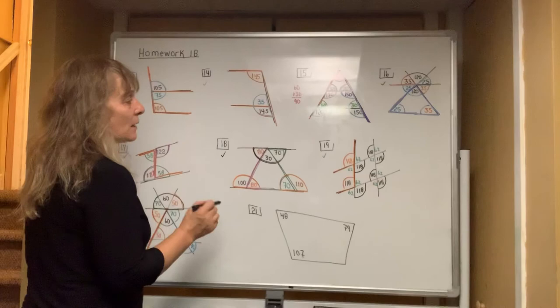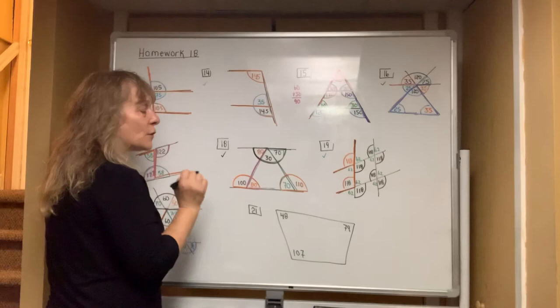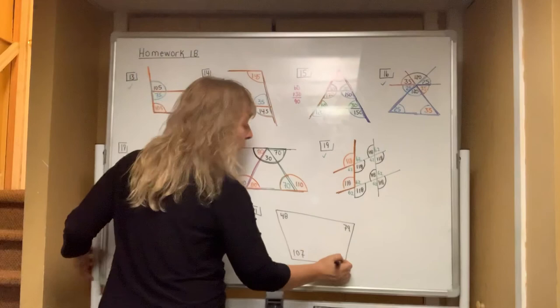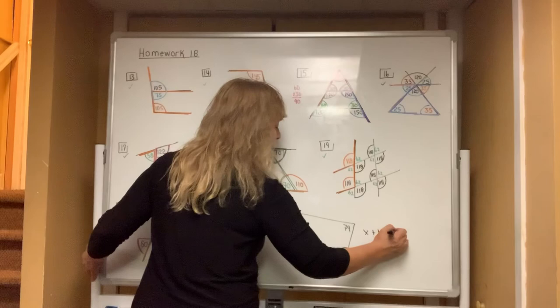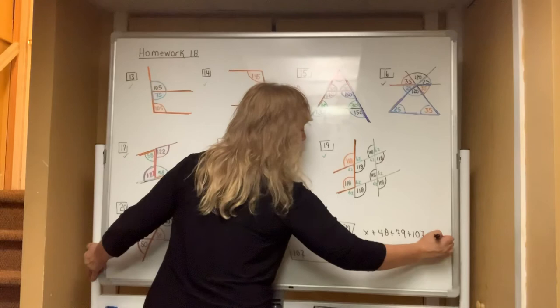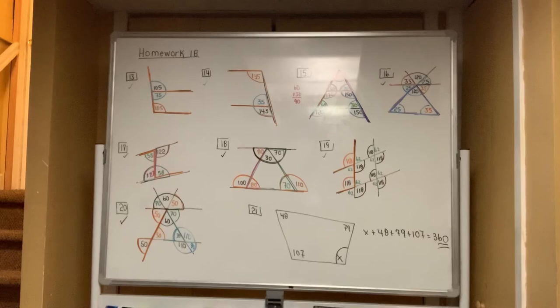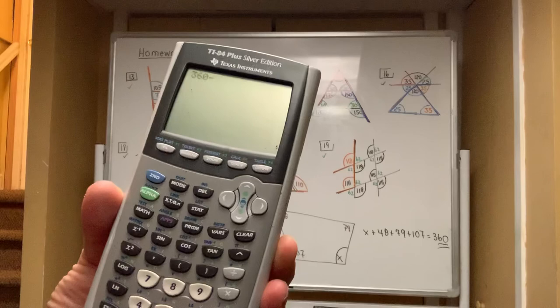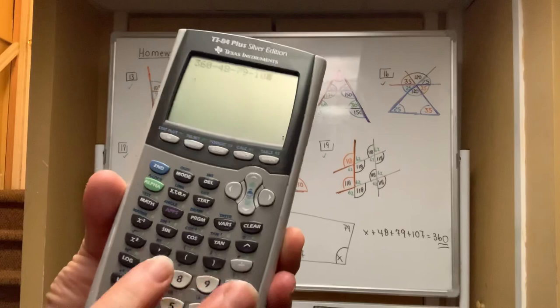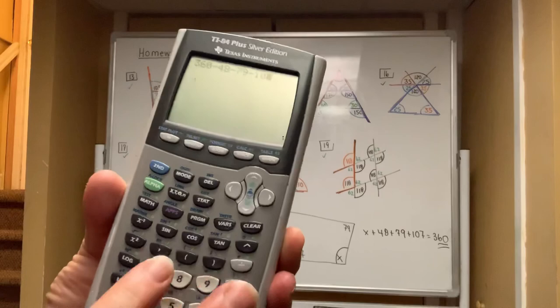Last one — something you may not know. When you have a triangle, the three angles always add up to 180. But when you have a quadrilateral — four sides — the angles always add up to 360. Always. So it's x plus 48 plus 79 plus 107 equals 360. Type in 360, subtract 48, subtract 79, subtract 107, and you get 126. That is the missing angle, and you're done.